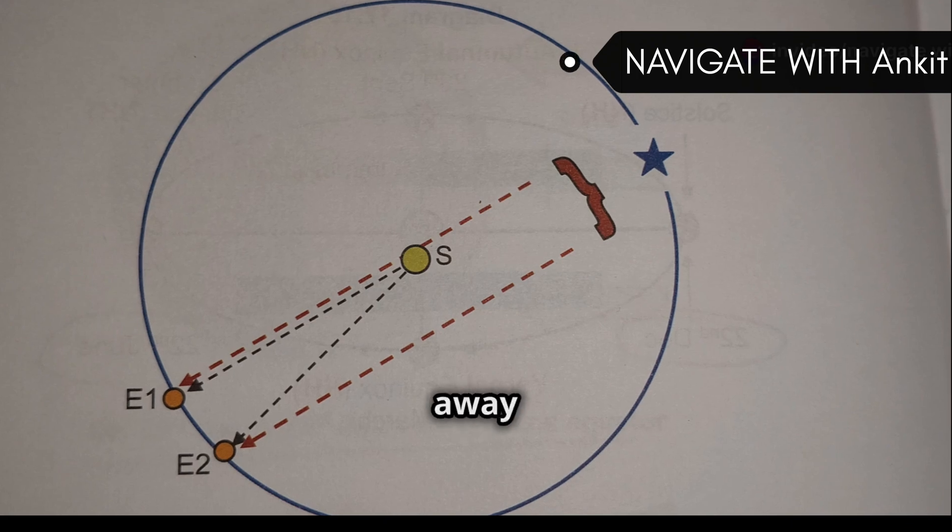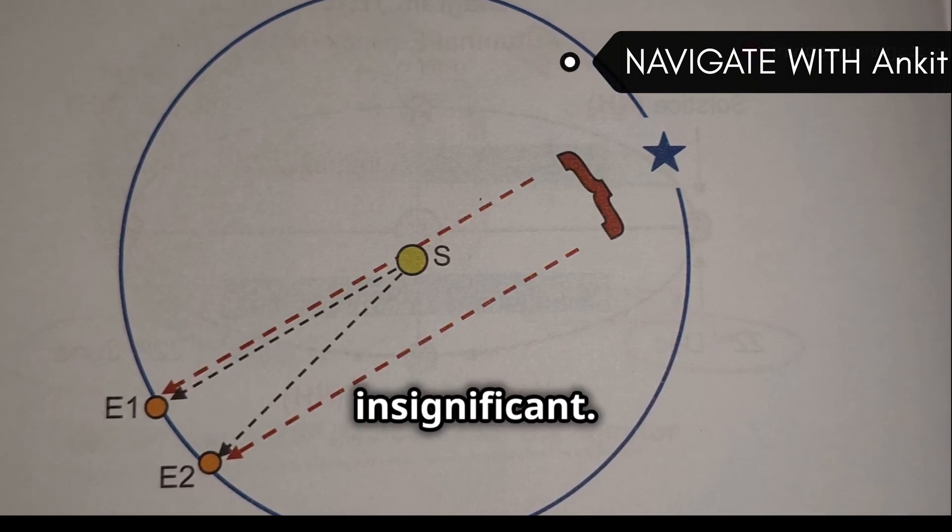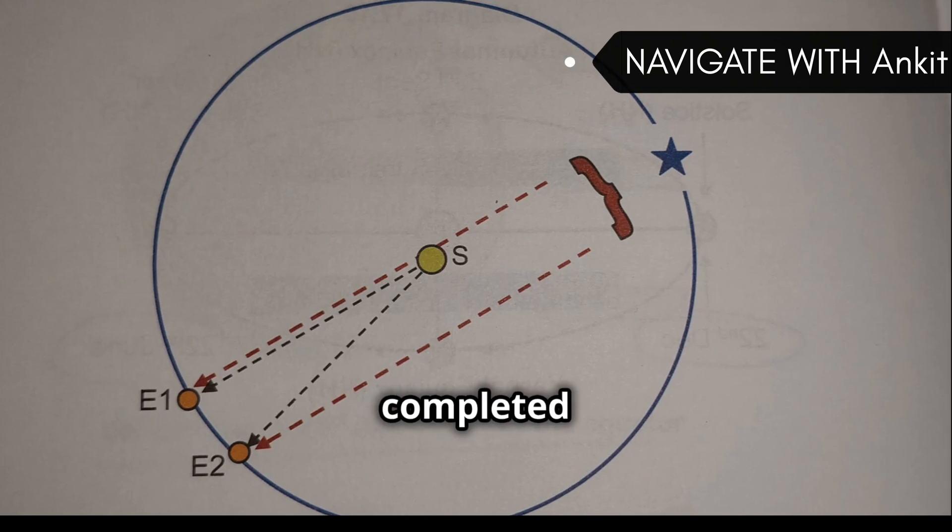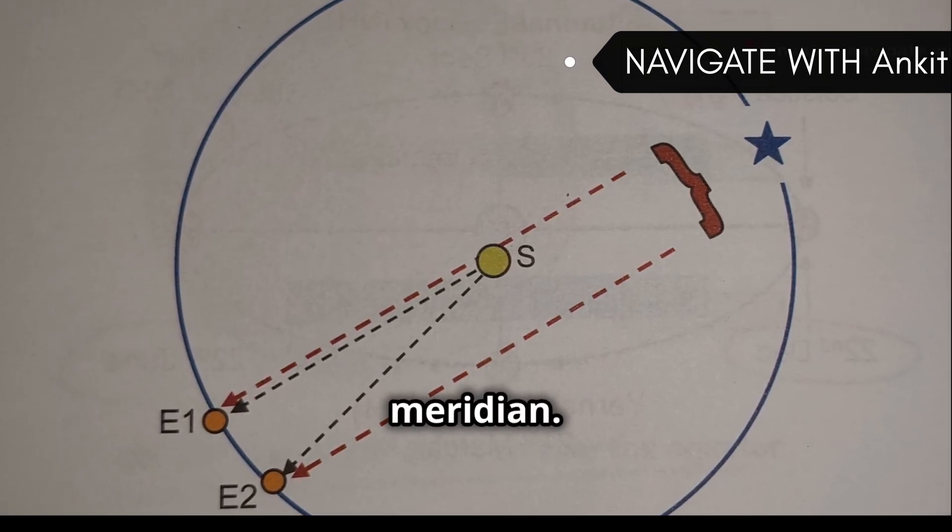Now, the star is so far away that the movement of the Earth along its orbit in just one day is insignificant. When the Earth has completed a full rotation of 360 degrees, the star is once again on your meridian.